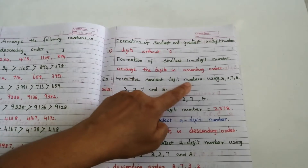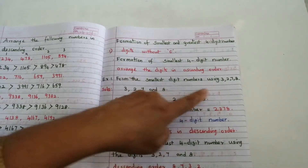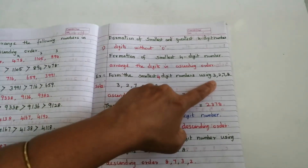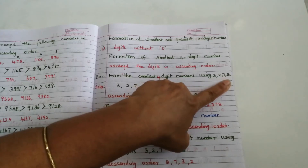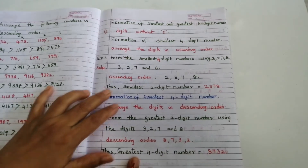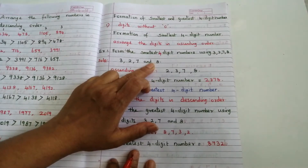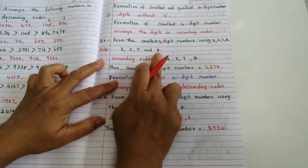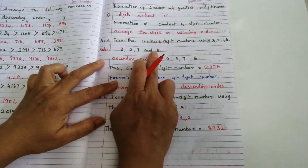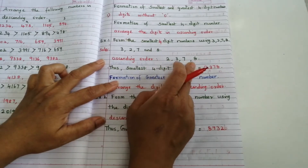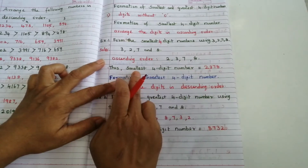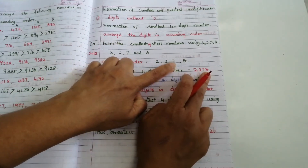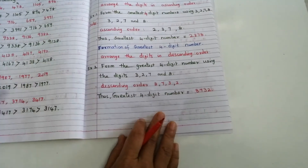Example one: form the smallest four-digit number using 3, 2, 7, 8. There is no zero, so we arrange in ascending order — small to big: 2, 3, 7, 8. So the smallest four-digit number is 2378.